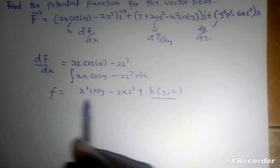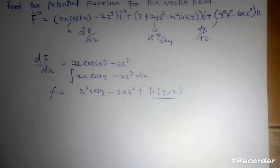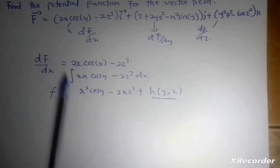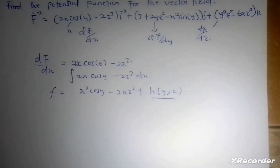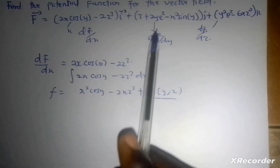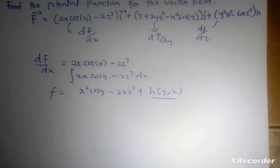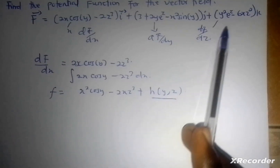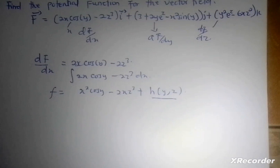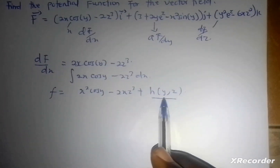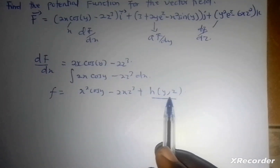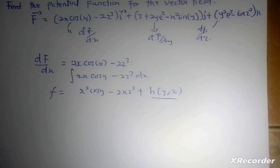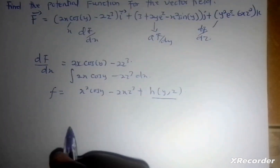Now, since this is my potential function, if I differentiate it with respect to x I should get exactly what I have for f sub x. If I differentiate it with respect to y I should get exactly what I have for f sub y. And finally, if I differentiate it with respect to z, I should get f sub z. So, in order to find the function h(y, z), I'm going to differentiate my potential function with respect to y and compare it to what I have.